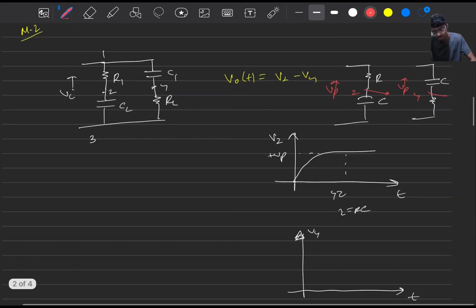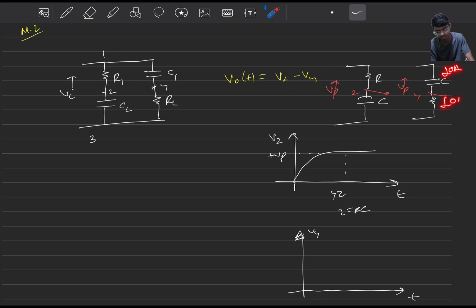We can see that this cap will be short circuit initially, so V4 will be plus Vp initially because this whole voltage will come across this R. And at open circuit this cap will not conduct any current, so current through the R will be also zero and the drop across this R will also be zero.